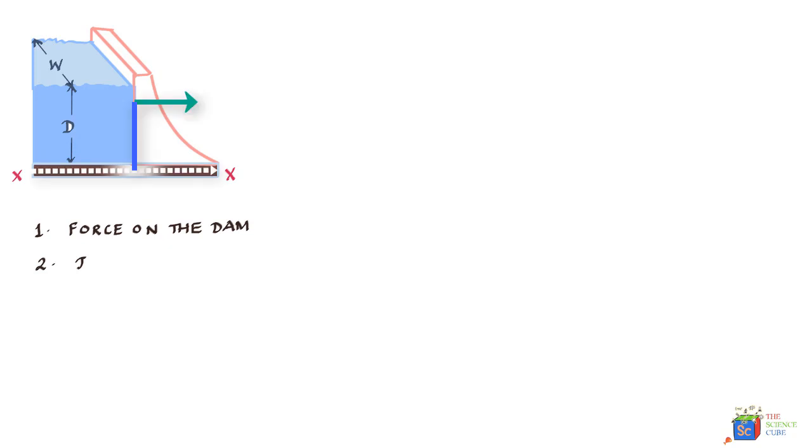So we have to find this torque about the line xx. Let's go on and solve part one of the problem first. We know that the pressure at any point y below the surface of the water would be given by the equation p equals ρgy.